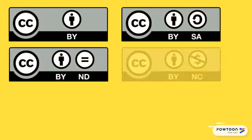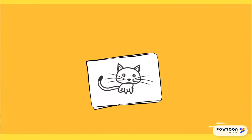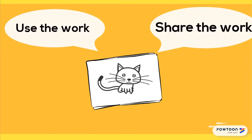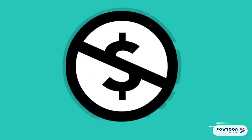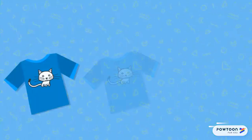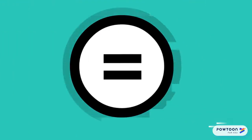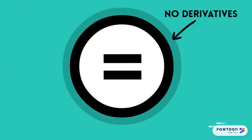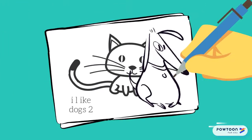These different licenses help people understand if and how they can use, share, or build on a work. This icon means that only non-commercial uses are permitted, so no one can profit from using your picture. This icon means that no one can make changes to the original work, such as photoshopping a dog into your cat picture.